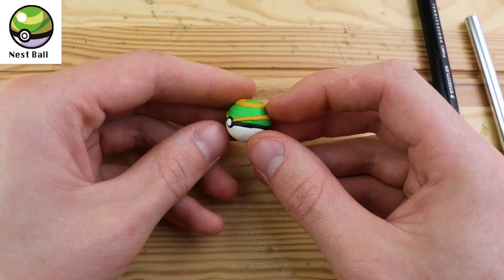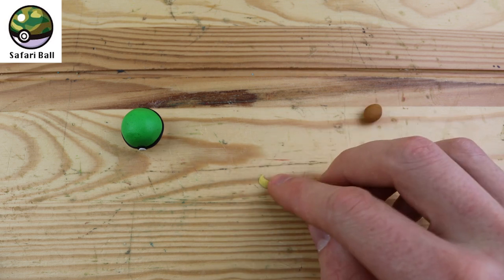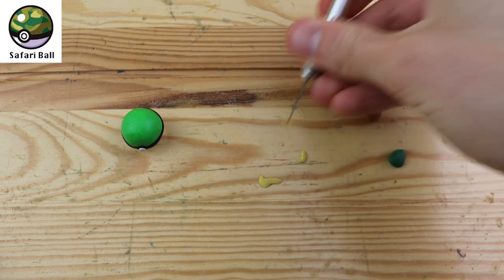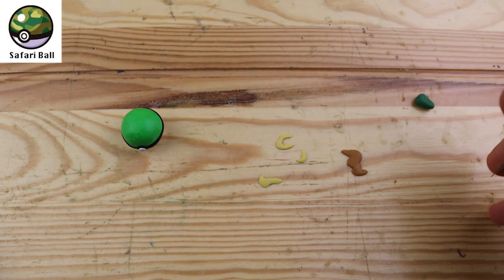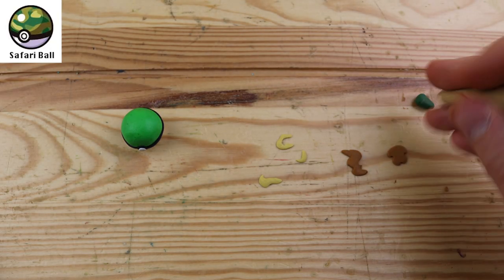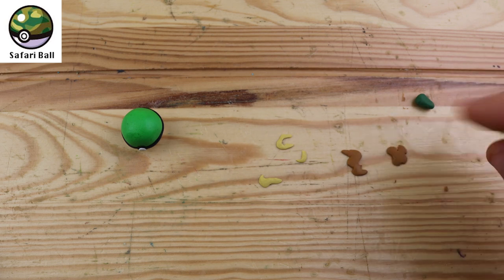And we can move on to our next pokeball, which is the safari ball. This one took a little while to figure out how I would create this camouflage pattern on the top, but I think by cutting out and shaping these sort of random blotches, it will look pretty good like a camouflage design.